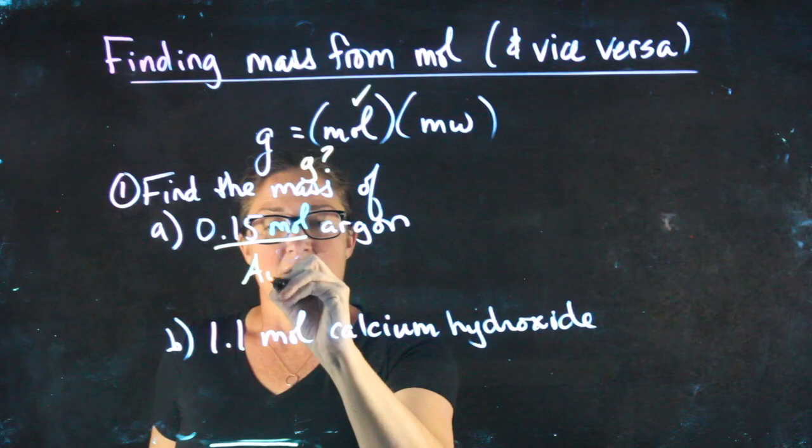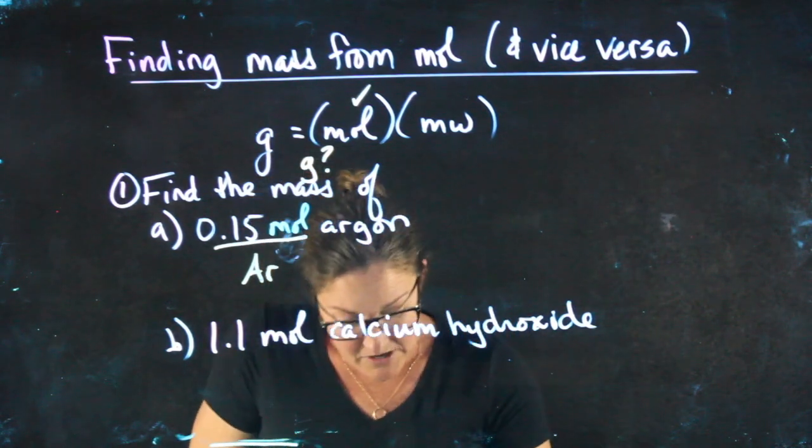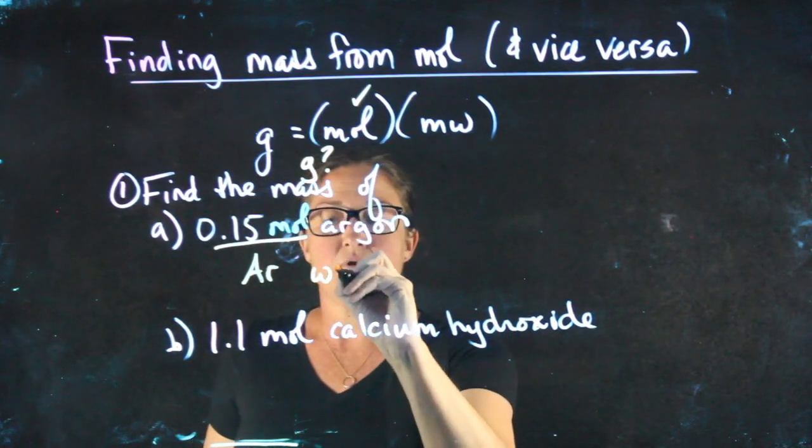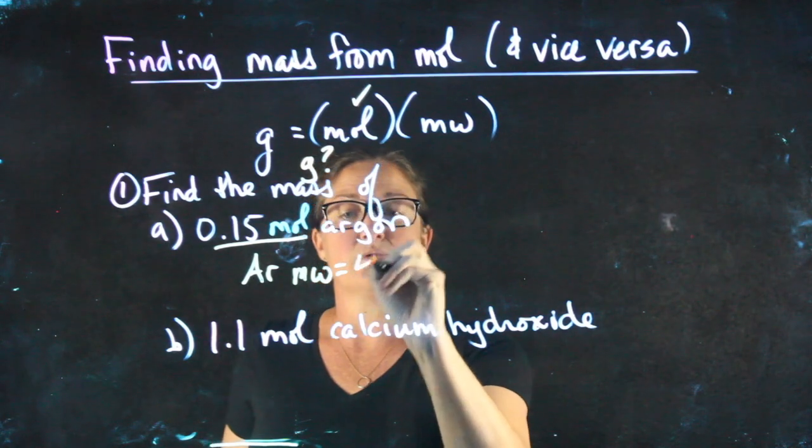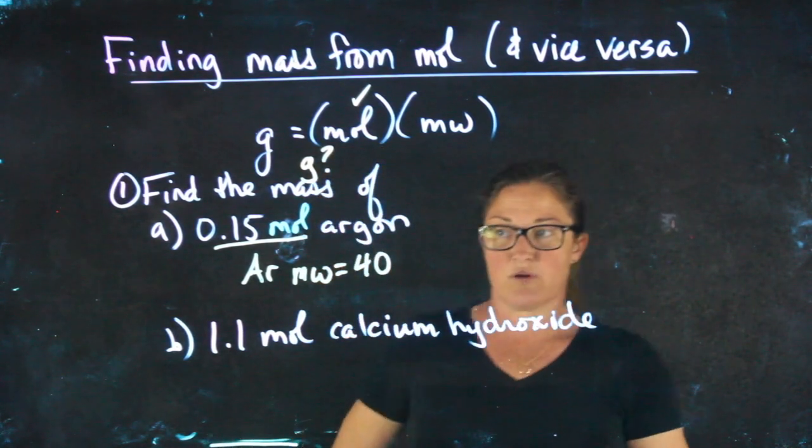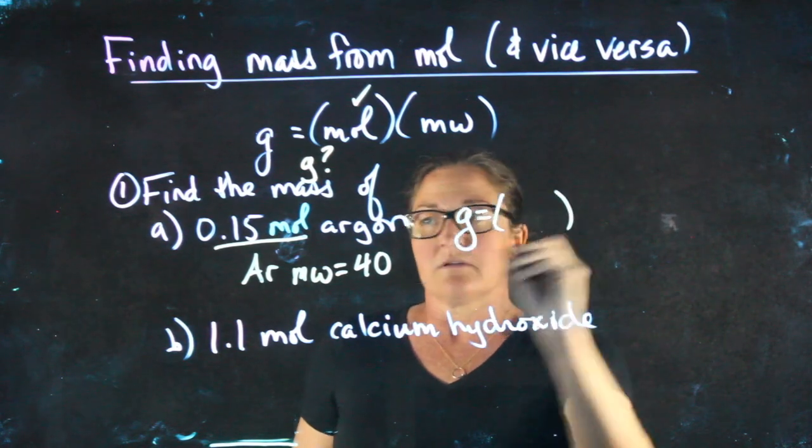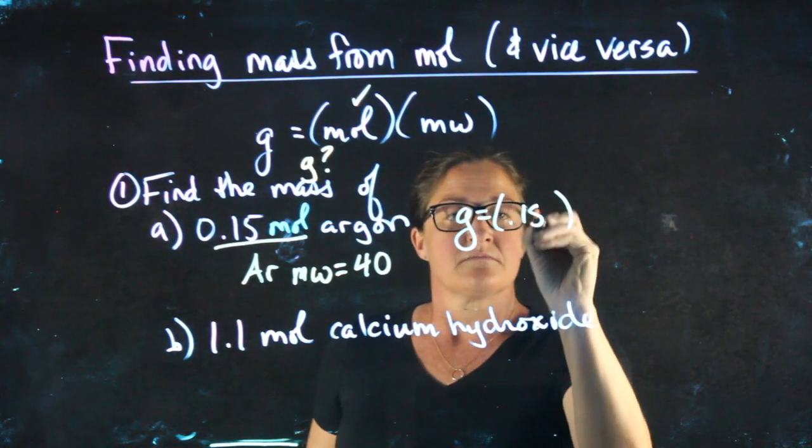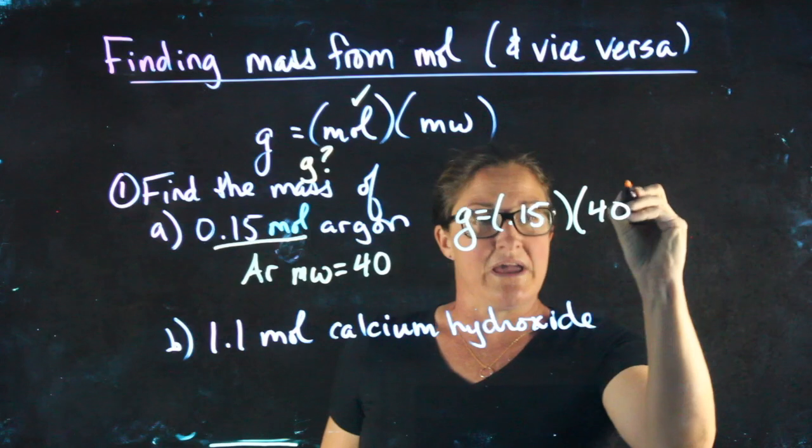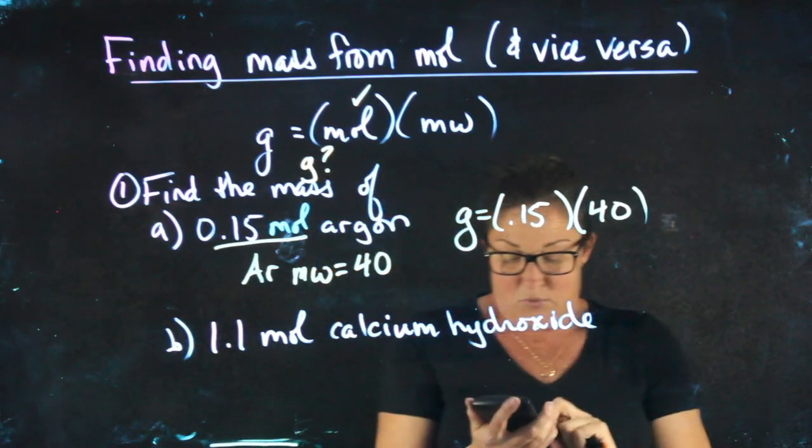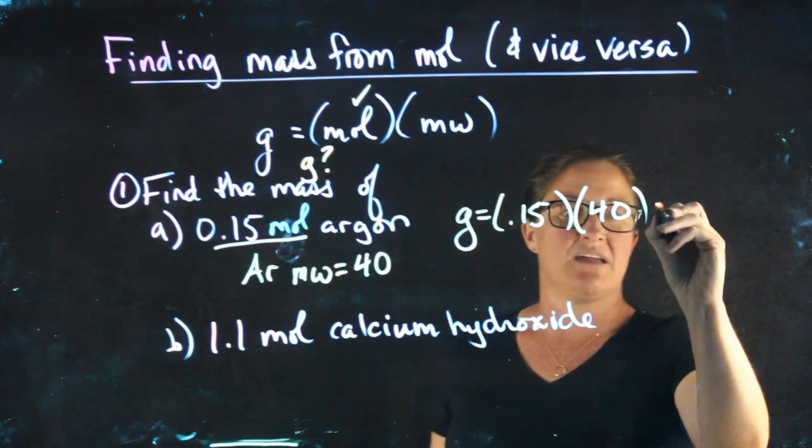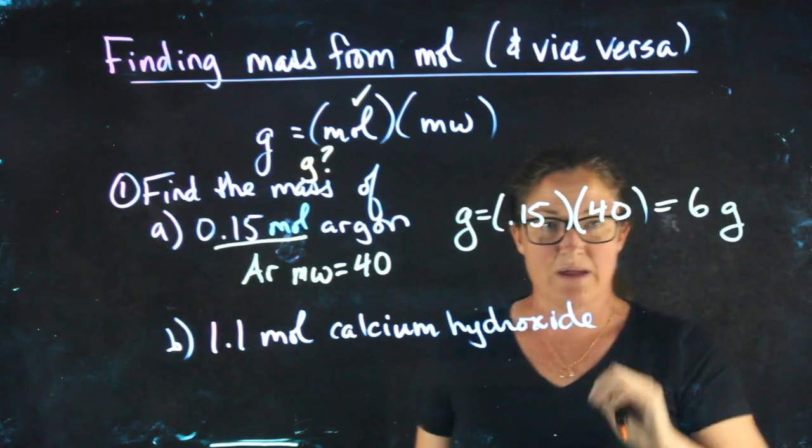Argon is simply Ar. When I find it on the periodic table, it's 39.9, but I round to the nearest whole number, so I'm going to use a molecular weight of 40. Moles times molecular weight: 0.15 times 40 gives me a nice even 6 grams.